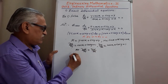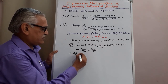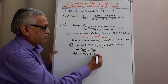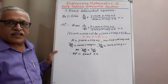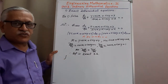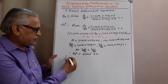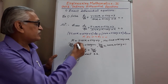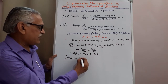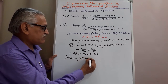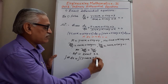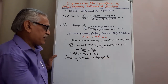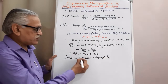Since ∂M/∂y equals ∂N/∂x, the given equation is an exact differential equation. To find its solution, we perform two steps. In the first step, we integrate M with respect to x: the terms of M are y cos x, plus sin y, and plus y. Integrating with respect to x, y is a constant, so we get y sin x.